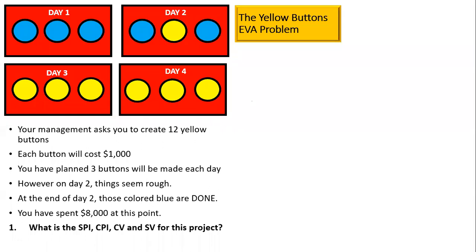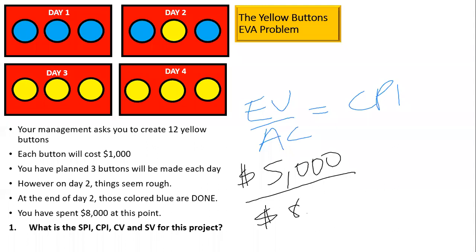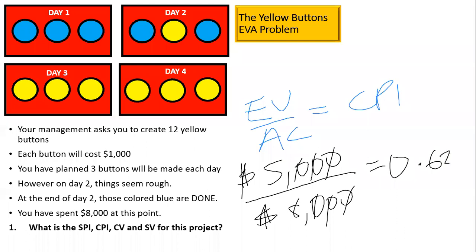Earned value divided by actual cost equals CPI. We have $5,000 divided by $8,000. Remember, the dollar signs are always there in these indices, but the dollar signs cancel and the zeros cancel, leaving 5 divided by 8. And if you follow through with that, 5 divided by 8 is 0.625. So the answer to this problem is 0.625.